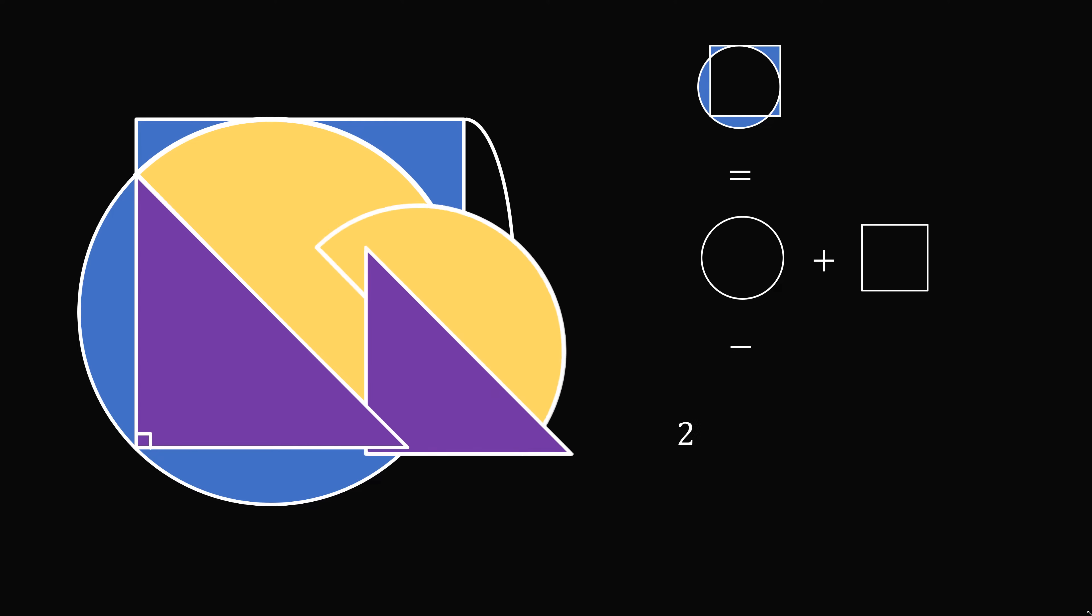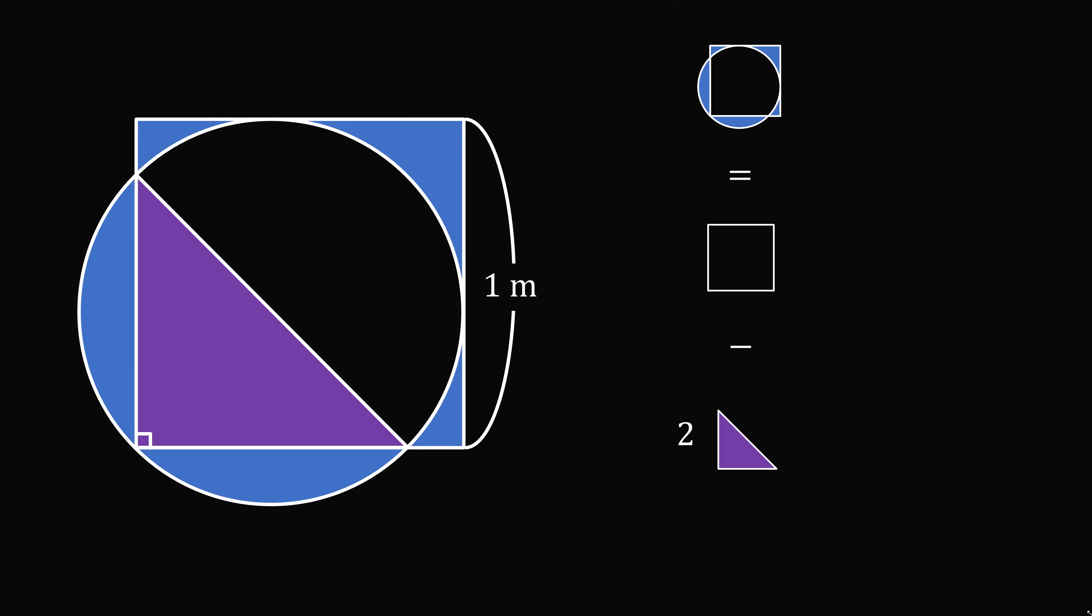So we'll substitute those in. From here, we have two times the area of a semicircle, and that will exactly cancel out with the area of the circle. So now we have a simple equation. The area that's shaded in blue equals the area of the square minus two times the area of this right triangle.